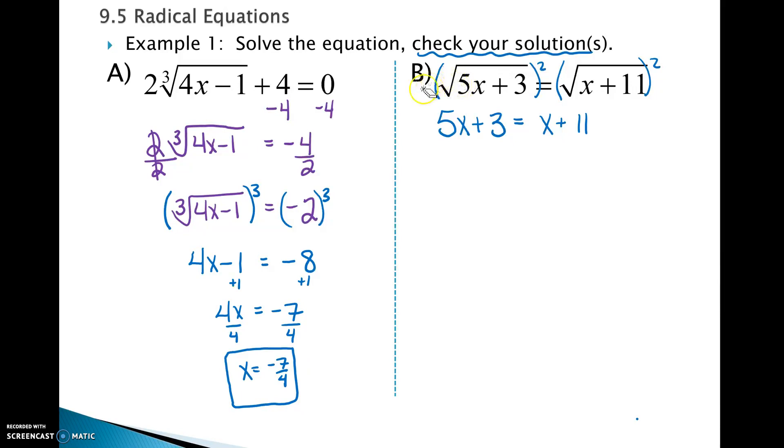So take a moment, pause the video if you're watching, finish solving this equation, and then once you're done, we'll talk about how to check your solutions. We are going to subtract x on both sides. That will give us 4x on this side. I'm also going to subtract 3 on both sides. So I get 4x equals 8. Did you end up getting x equals 2? Yes, ma'am.